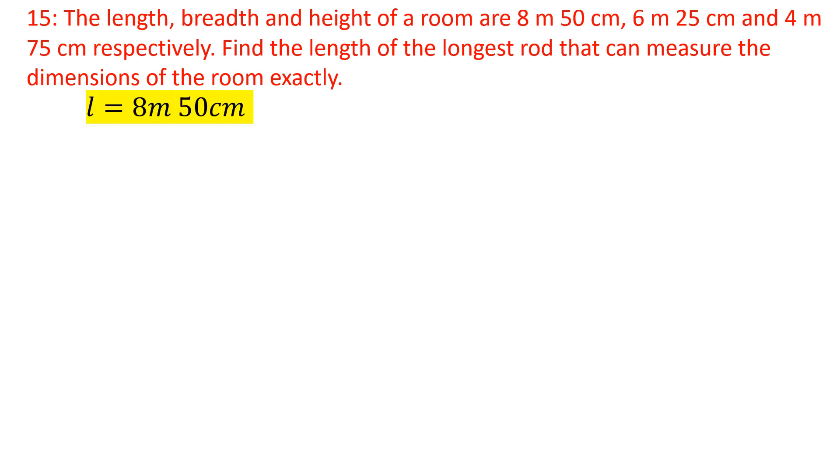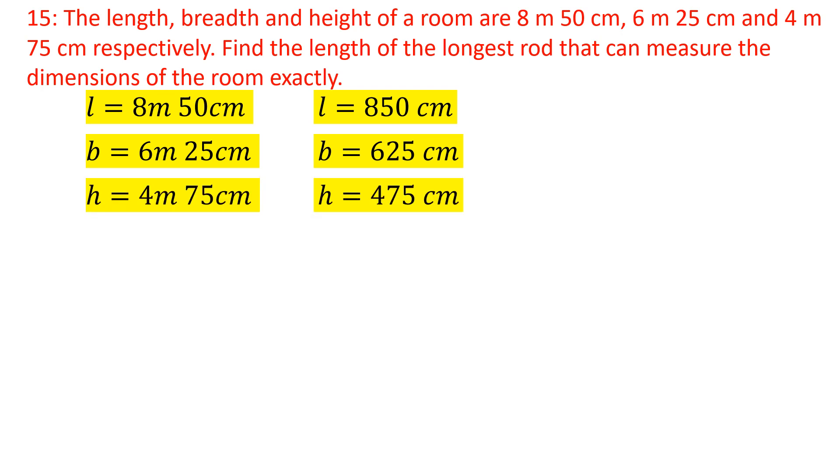Dimensions of the room: L = 8m 50cm, which we can convert to 850 cm. B = 6m 25cm, which is 625 cm. H = 4m 75cm, which is 475 cm.